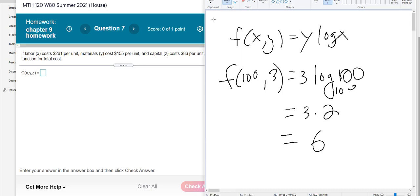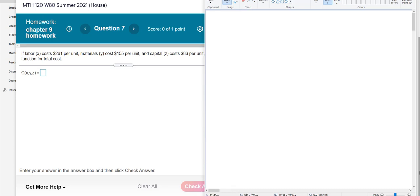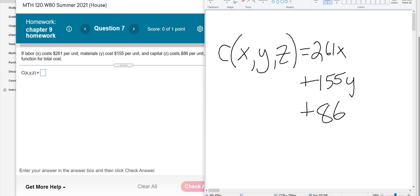All right, so here we have an application, number 7. And it's a similar situation, but they want us to actually write out the function. So we have a cost function that involves more than one variable. And this is why we have to be able to do multivariable stuff, because costs often involve more than one thing. So it's $2.61 for every unit, plus $1.55 for materials for every unit,